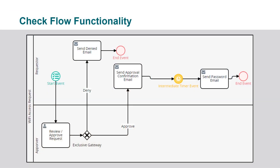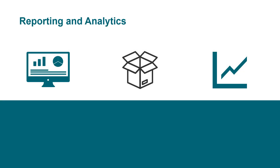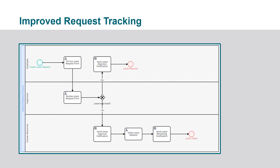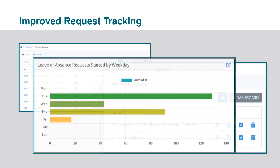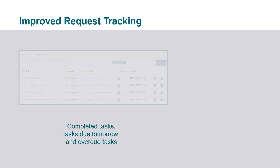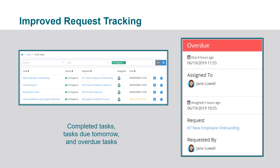Workflow provides for the debugging of scripts and processes within the application to help users more quickly and easily validate workflows. Additionally, the process modeler includes check flow functionality that follows each path or routing option and identifies unreachable objects. This real-time testing works to prevent a process from entering an unaccommodated scenario. Workflow's enhanced reporting and analytics functionality includes several out-of-the-box charts and graphs for simplified data visualization. Workflow provides more power to build and run processes, as well as shareable saved searches, dashboards, and charts and graphs. These enhanced features work together to improve tracking of requests. Service level agreements, graph request data, views to display completed tasks, tasks due tomorrow, and even overdue tasks can all be created using the enhanced functionality of Ellucian Workflow 2.0.